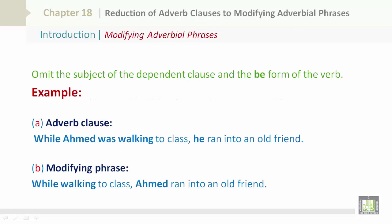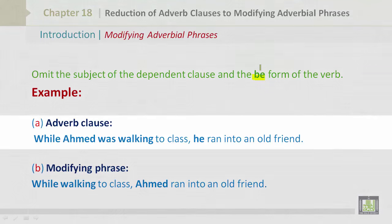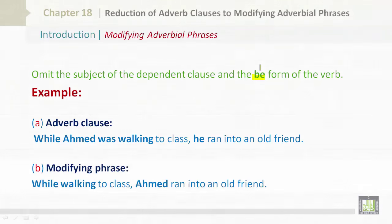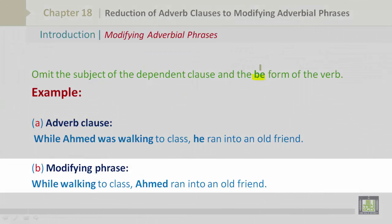Introduction to Modifying Adverbial Phrases. One of the first things you need to know is that you omit the subject of the dependent clause and the BE form of the verb. For example, the adverb clause: 'While Ahmed was walking to class, he ran into an old friend.' The modifying phrase becomes: 'While walking to class, Ahmed ran into an old friend.'